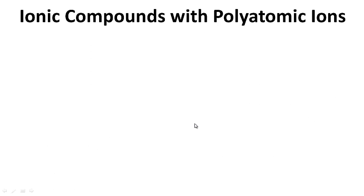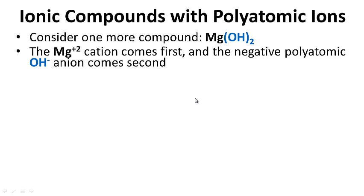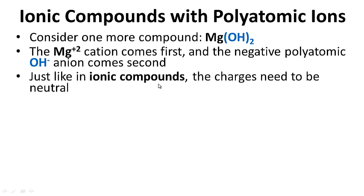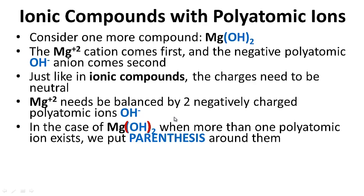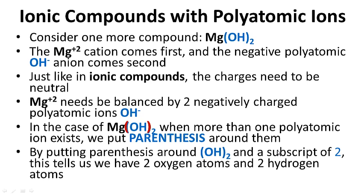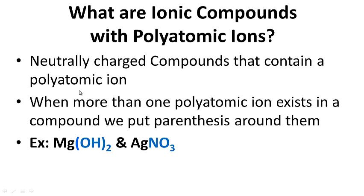Consider magnesium hydroxide. The magnesium plus two cation comes first and the hydroxide anion OH minus one comes second. Just like ionic compounds, the charges need to be neutral. Magnesium plus two needs to be balanced by two hydroxide ions OH minus one, so we need two of them to balance the plus two charge. When more than one polyatomic ion exists, we put parentheses around them. So in magnesium hydroxide we write Mg(OH)2 — the subscript two tells us we have two oxygen atoms and two hydrogen atoms.